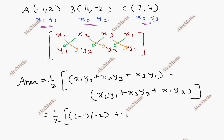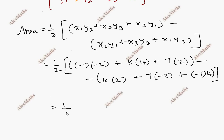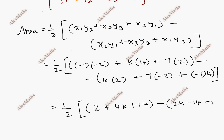Substituting the values, we get: one-half bracket open — (−1)(−2) plus K·4 plus 7·2 — minus — K·2 plus 7·(−2) plus (−1)·4 — bracket close. This gives one-half bracket open: 2 plus 4k plus 14 minus 2k minus 14 minus 4, bracket close.